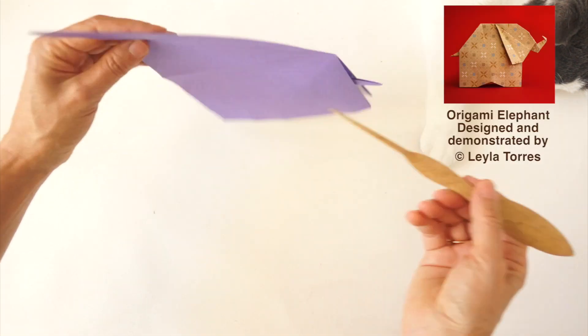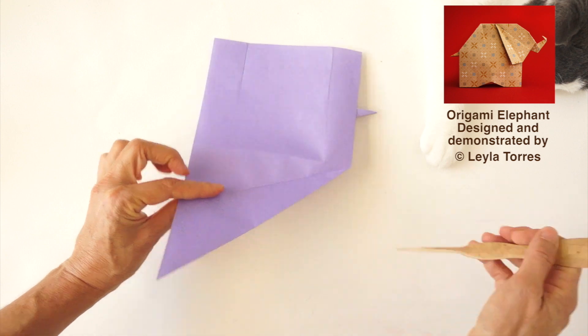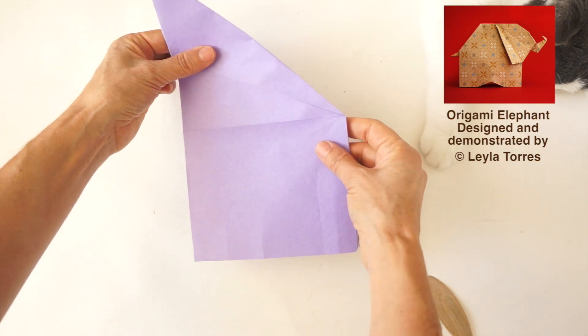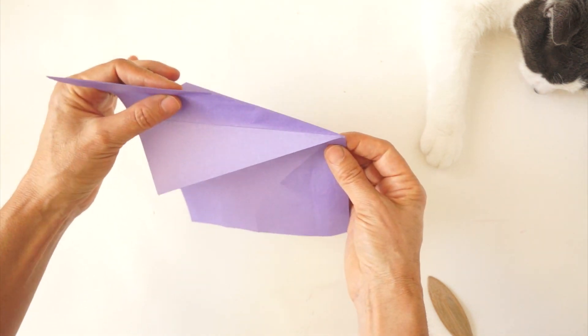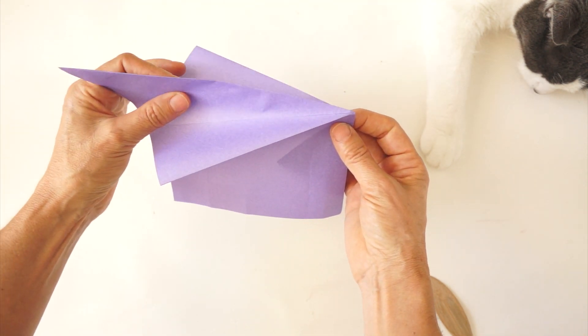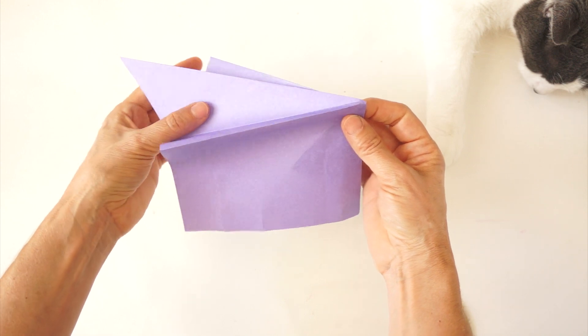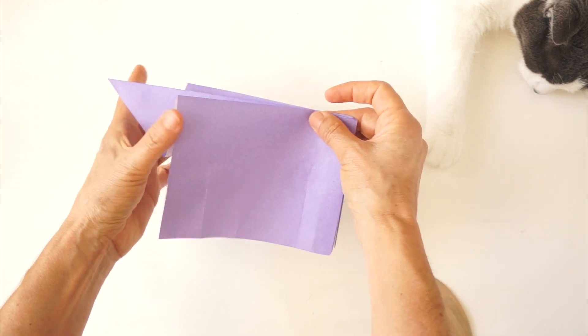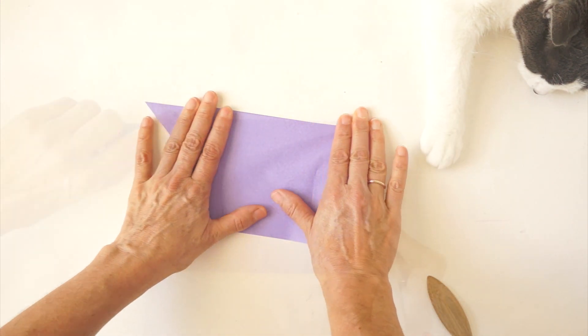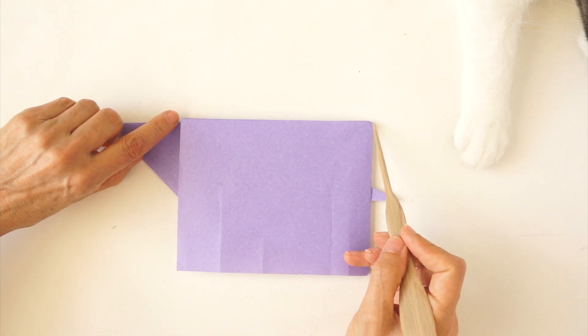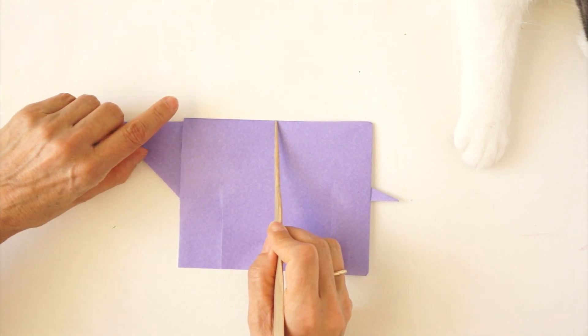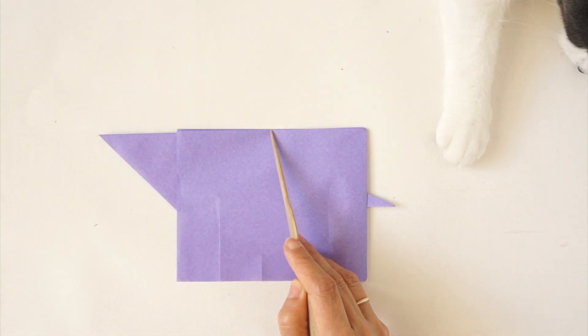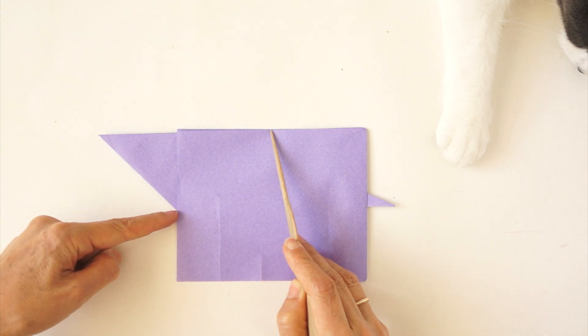This fold and this fold will be reinforced as mountain folds. So we can hold the paper from here. And press it down so that we collapse into this shape. Visually, we locate the midpoint between this corner and this corner. About here. We are going to make a fold starting at that point and finishing at this corner.